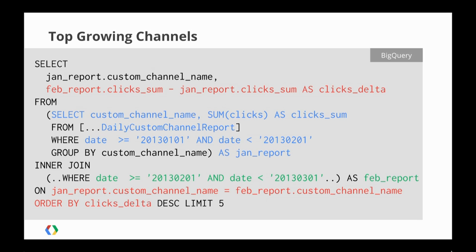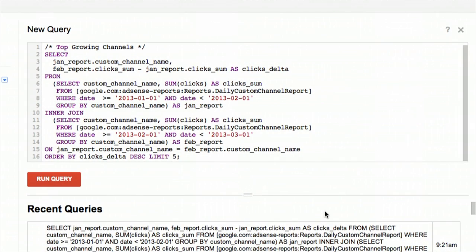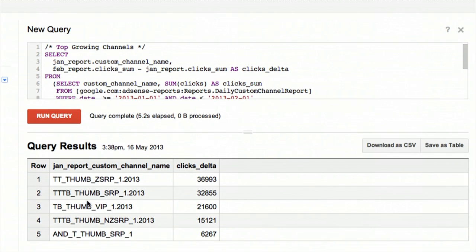Here is a query joining the results of two subqueries. In blue, we're retrieving a custom channel report for January, and in green the same thing for February. The outer query in red is joining the results of those two subqueries on custom channel name, then calculating the delta in the number of clicks and ordering by that. If I switch to the BigQuery browser tool, you can see I've got the full query here. If I press run, we should pretty quickly get back an answer — and here we've got some helpfully named custom channels and the number of additional clicks in February compared to January.